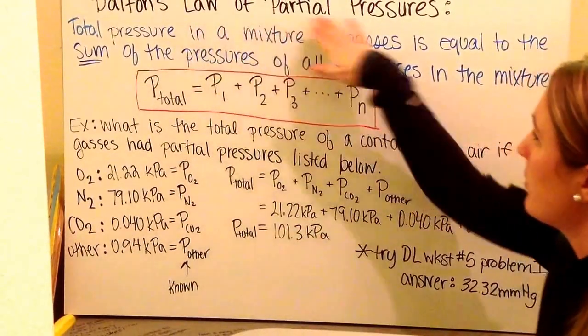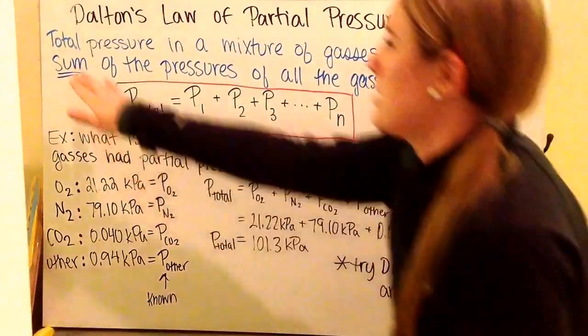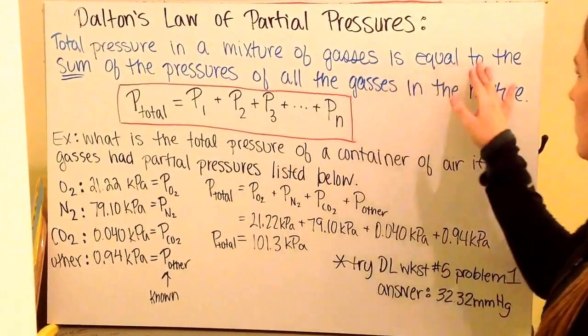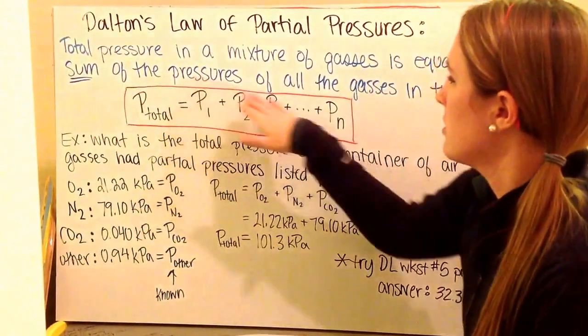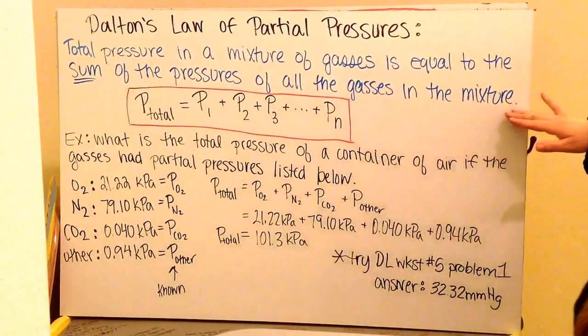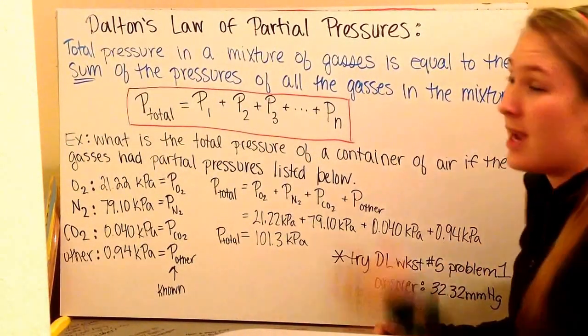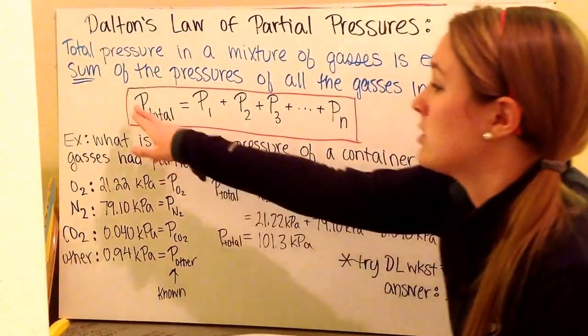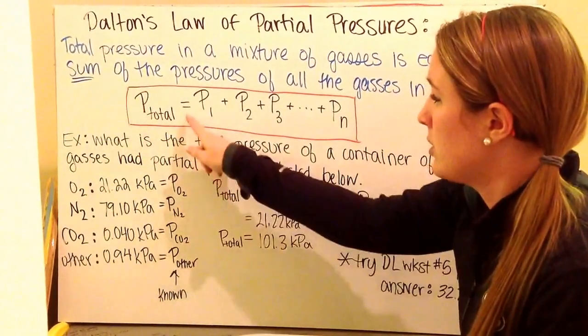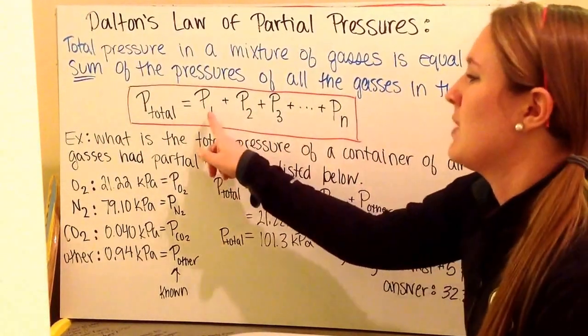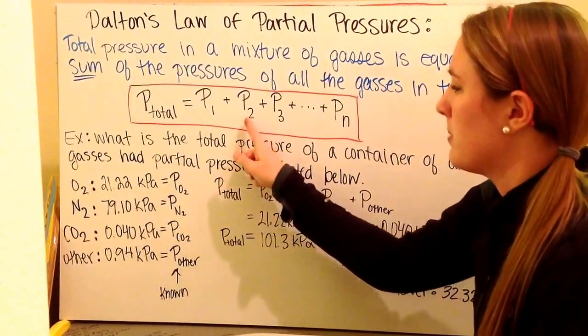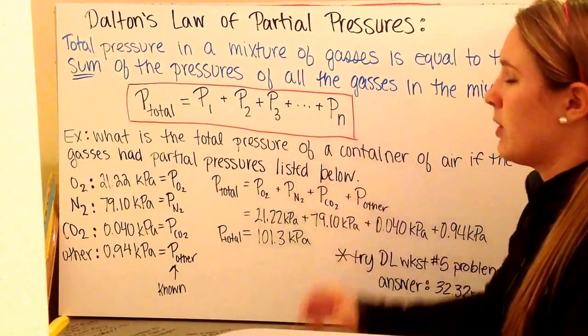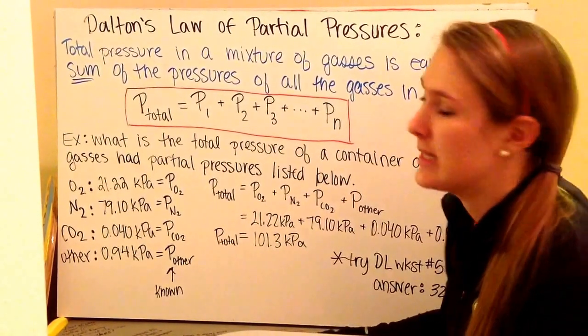Dalton's Law of Partial Pressures states that the total pressure in a mixture of gases is equal to the sum of the pressures of all the gases in the mixture. To put that sentence into an equation, we'd say that my total pressure is equal to the sum of the pressure of my first gas, plus the pressure of my second gas, plus the pressure of my third gas, on and on to the pressure of however many gases I have.